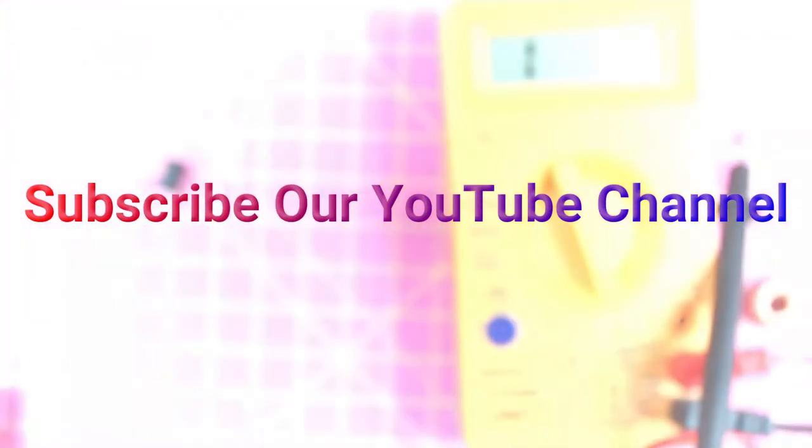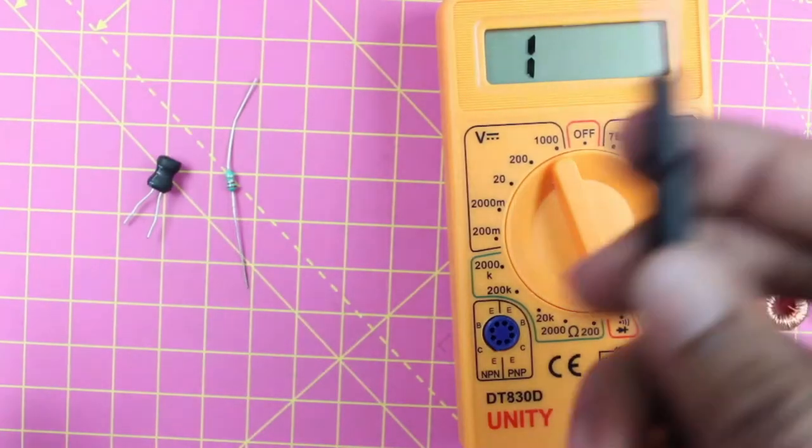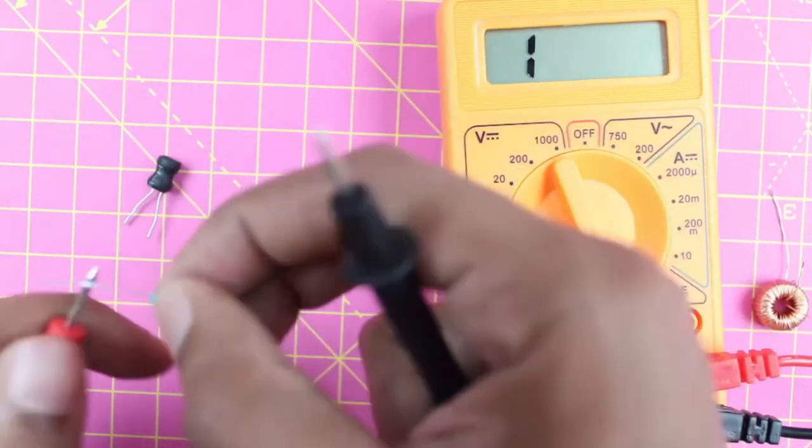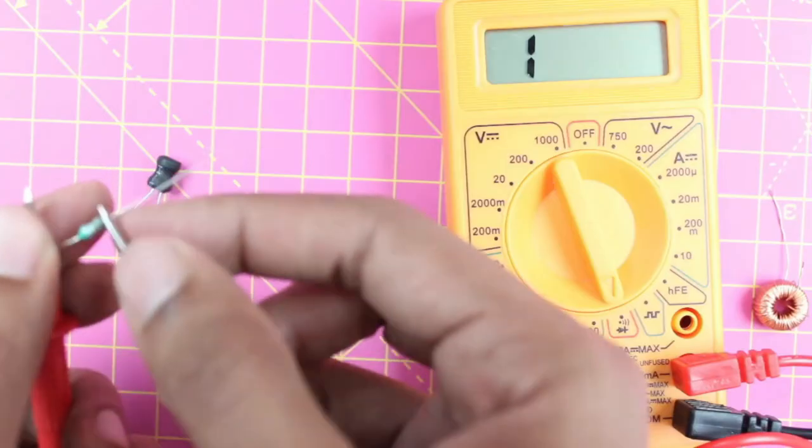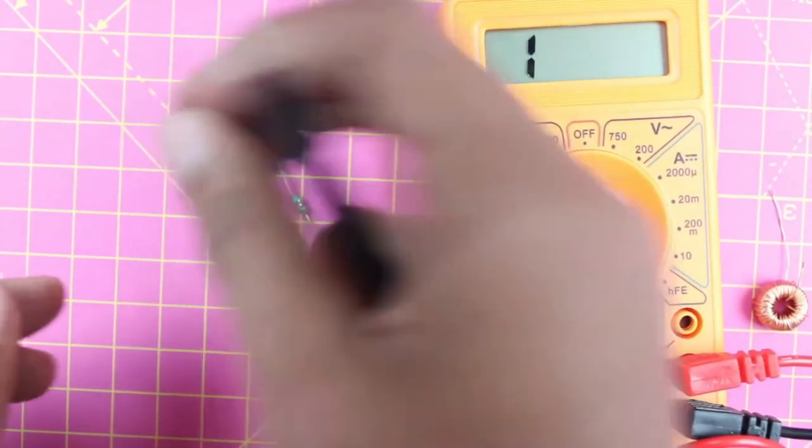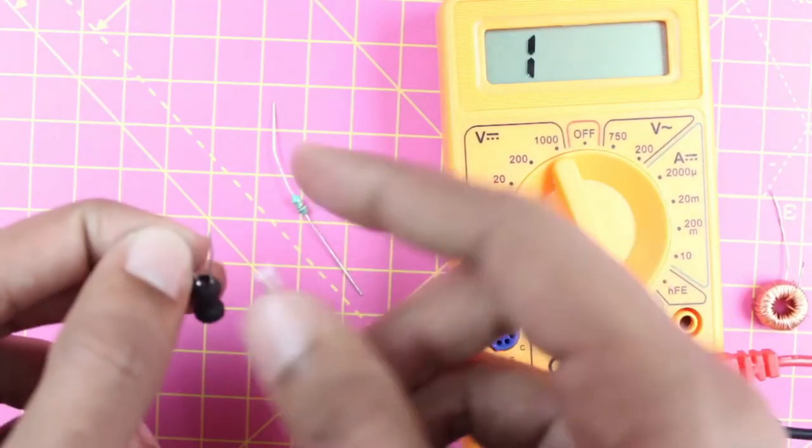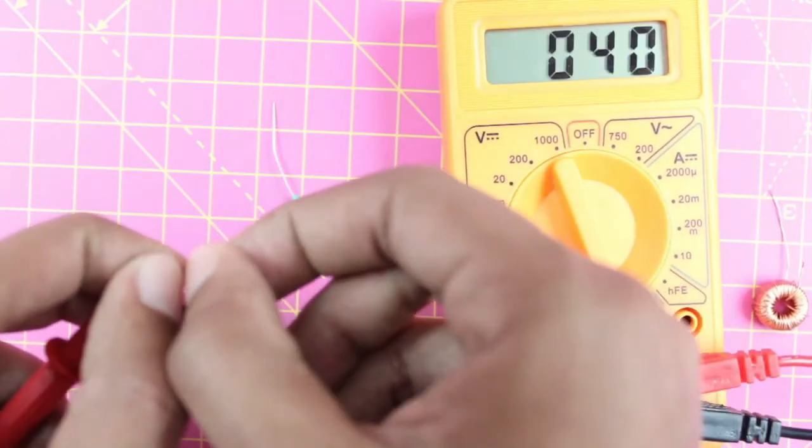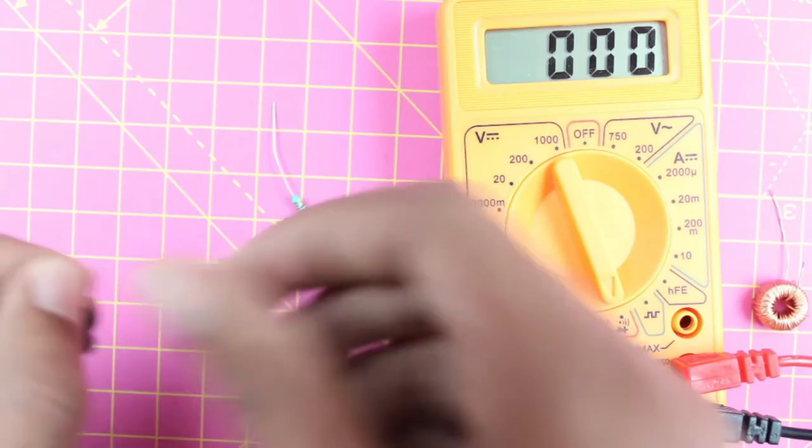Now let's proceed with measuring continuity for the other two inductors. This is an axial type inductor, just place your probes and you'll hear the continuity sound. Similarly for the drum type inductor, just place your probes for the continuity check, and if you hear a sound it means there is continuity and the inductor is working properly.